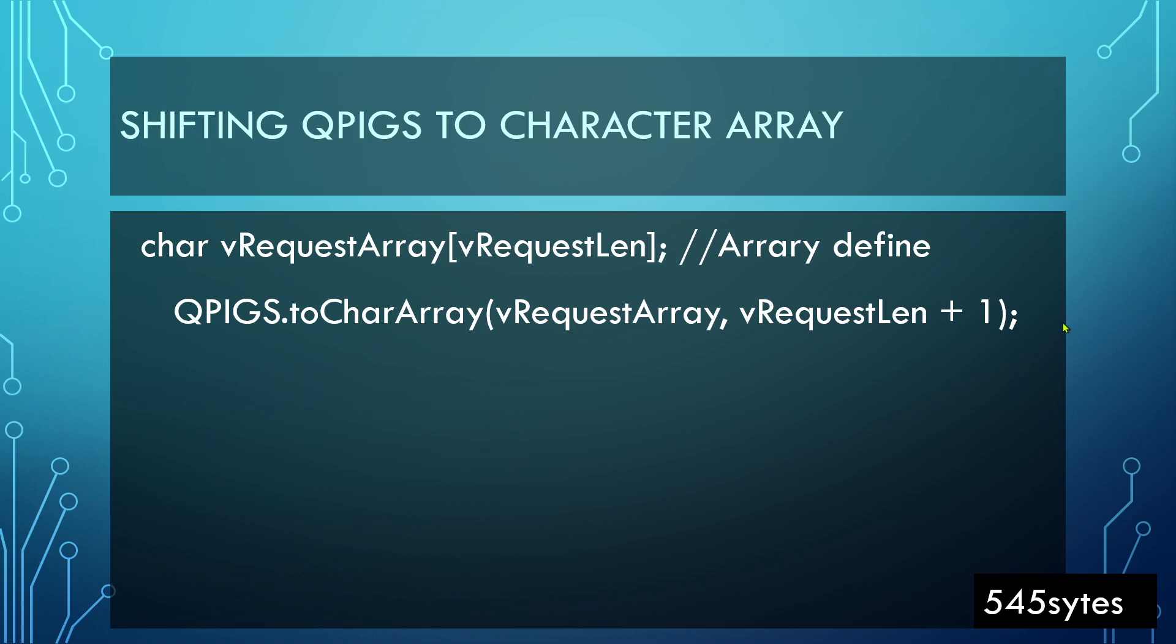If you recall, what we need to send to the CRC calculator is an array. So this QPIGS needs to be saved in an array instead of a text string so that we can use the CRC calculator. I have defined a character array with the length as defined above, and now this string is converted into array.